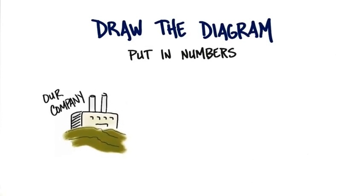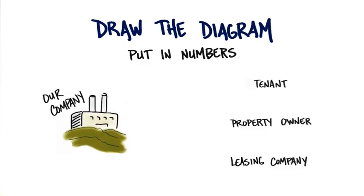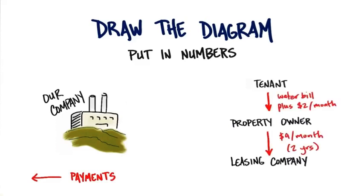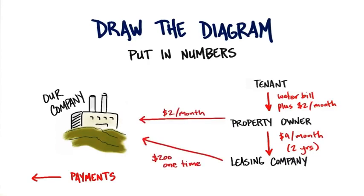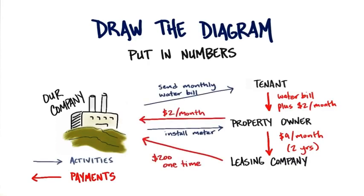What you've discovered is that there are three different customer segments: tenants, property owners, and leasing companies. I want to know, is this a subscription? What is the revenue stream that you have between each one of these customer segments? And what are the pricing tactics? And then how do you make money, and what do you provide?